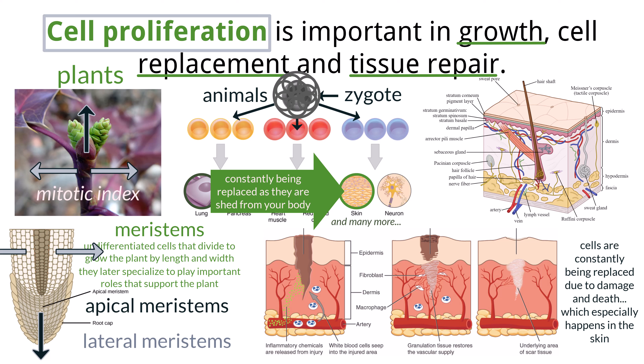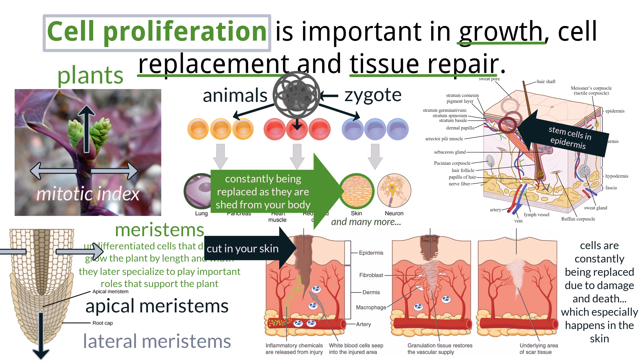The skin is the first line of defense against infection, and so it is important that the skin be repaired. There are stem cells in the basal or bottom layer of the epidermis that remain undifferentiated and continue to divide during your life. The daughter cells of these stem cells then differentiate into skin cells and leave the basal layer. When you have a wound, cell proliferation also occurs.